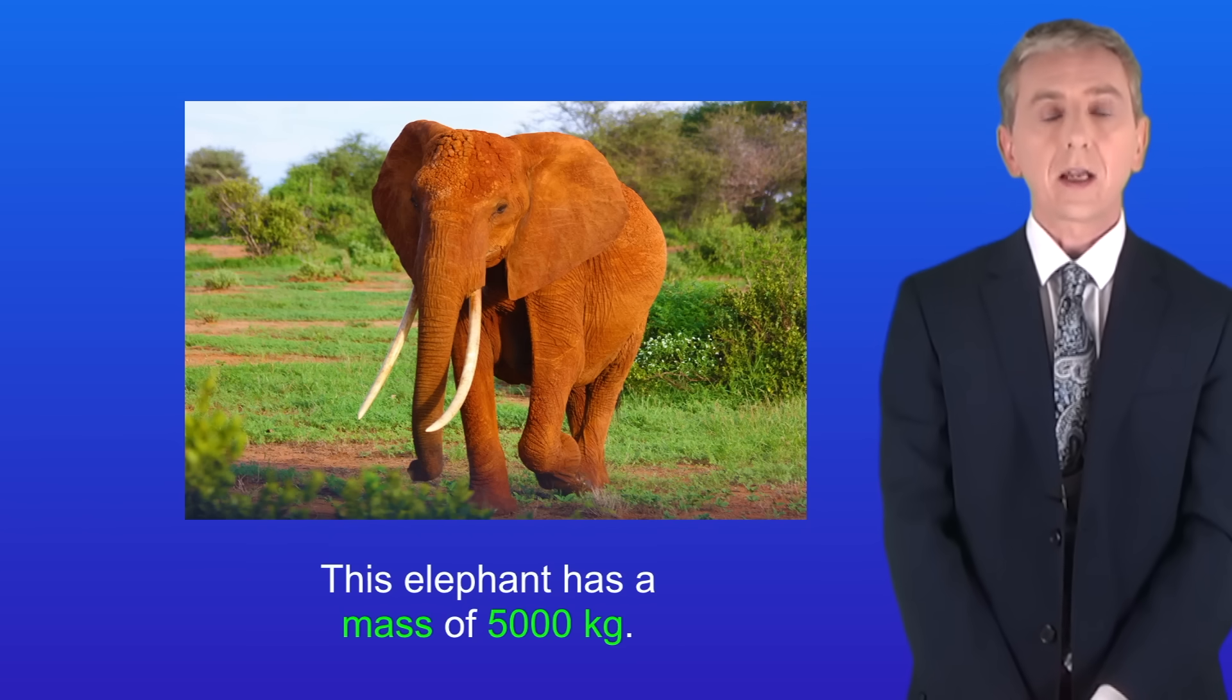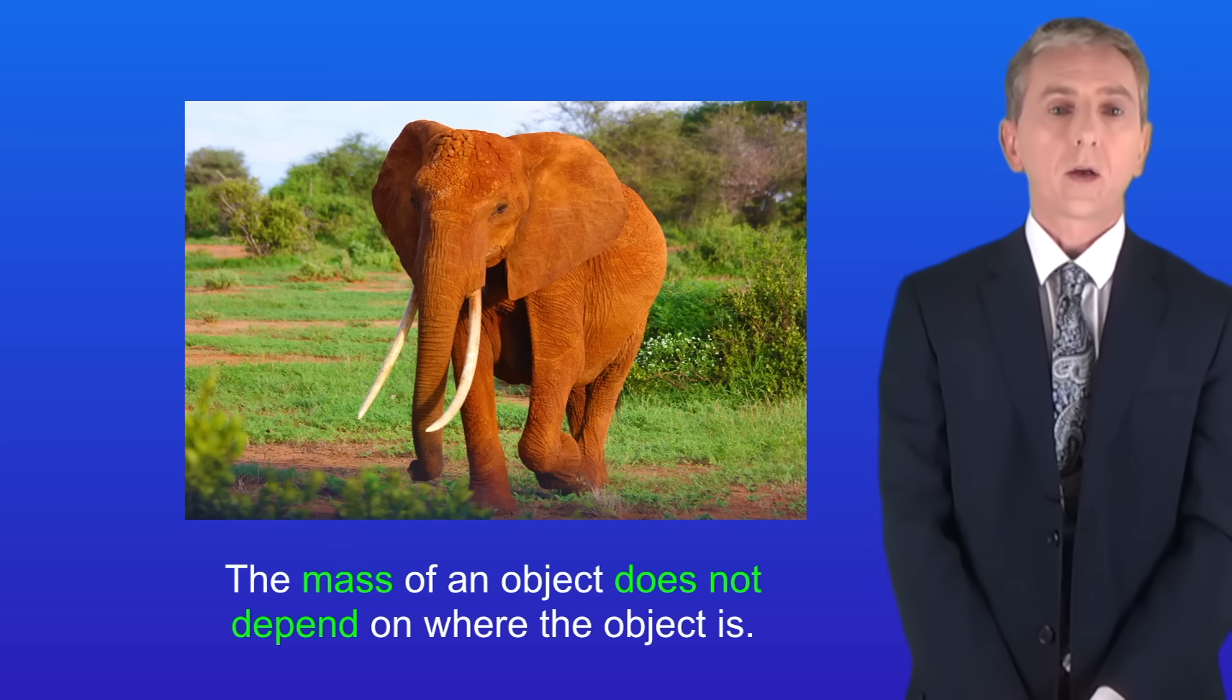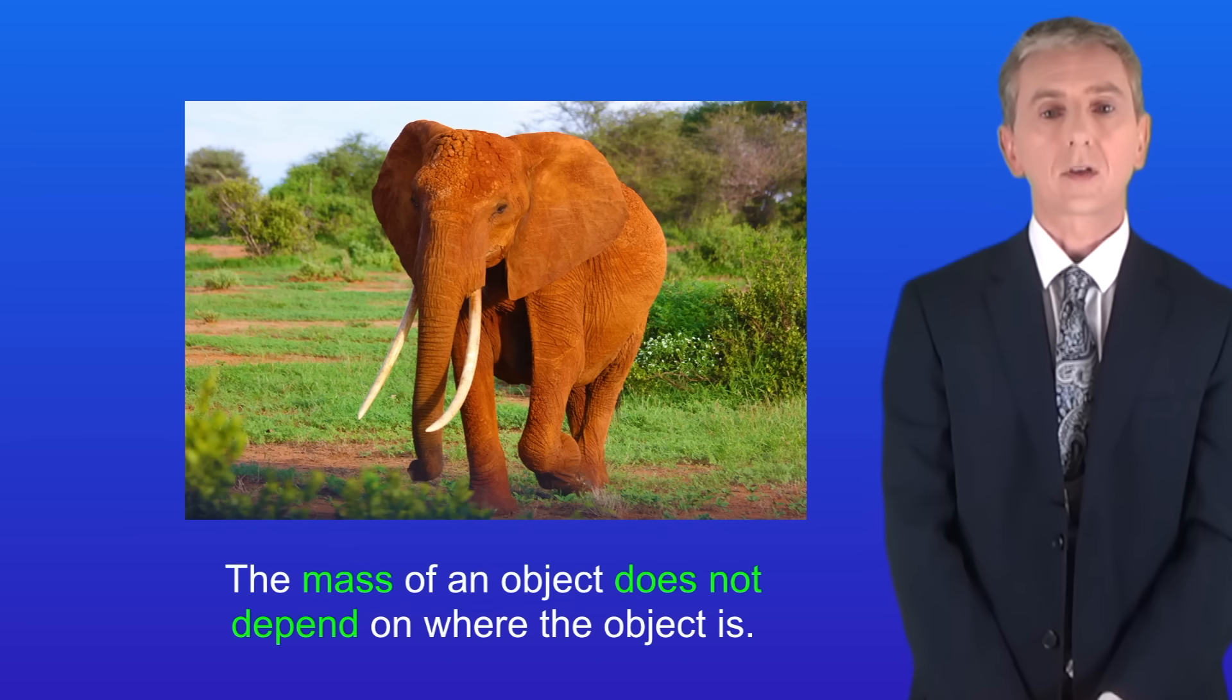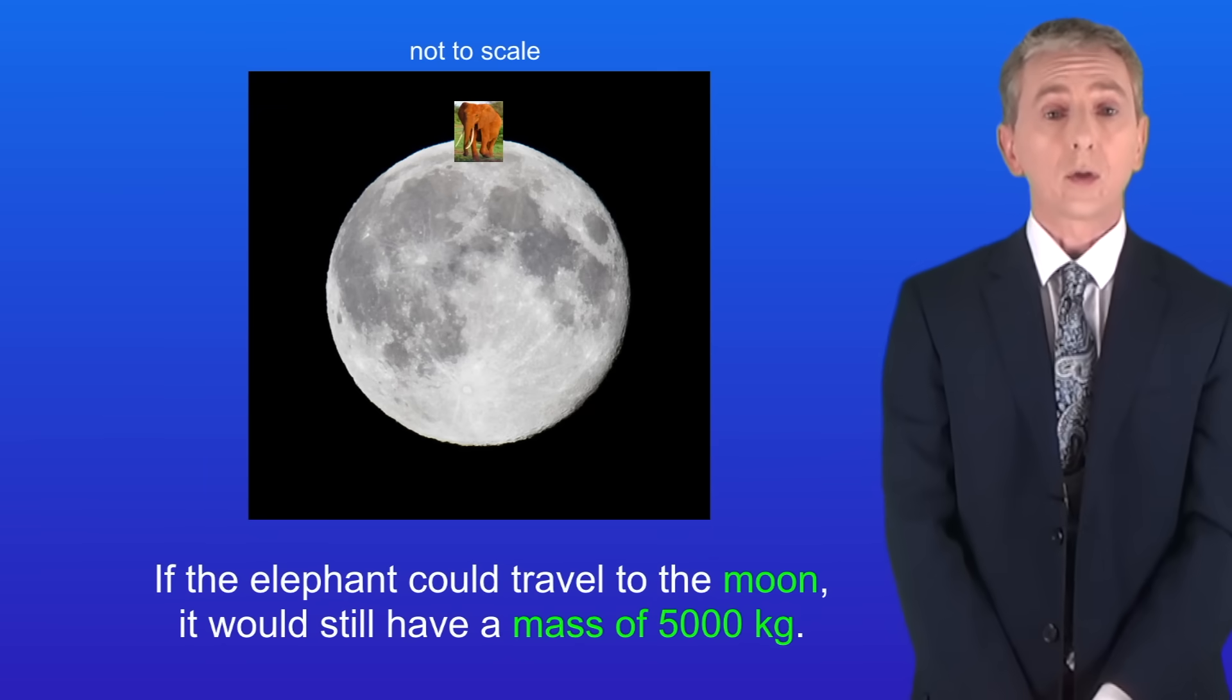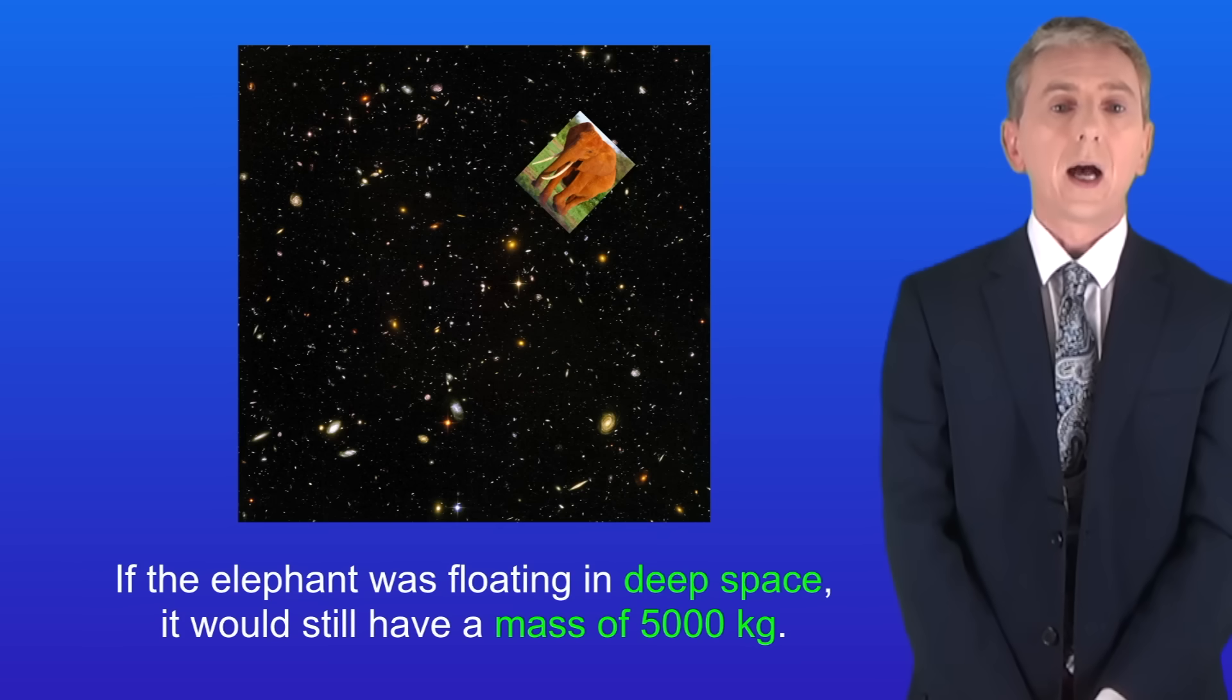So for example this elephant has a mass of 5,000 kilograms. Now the key fact is that the mass of an object does not depend on where the object is. So the mass of this elephant is 5,000 kilograms on the earth. If the elephant could travel to the moon it would still have a mass of 5,000 kilograms. And if the elephant was floating in deep space it would still have a mass of 5,000 kilograms.